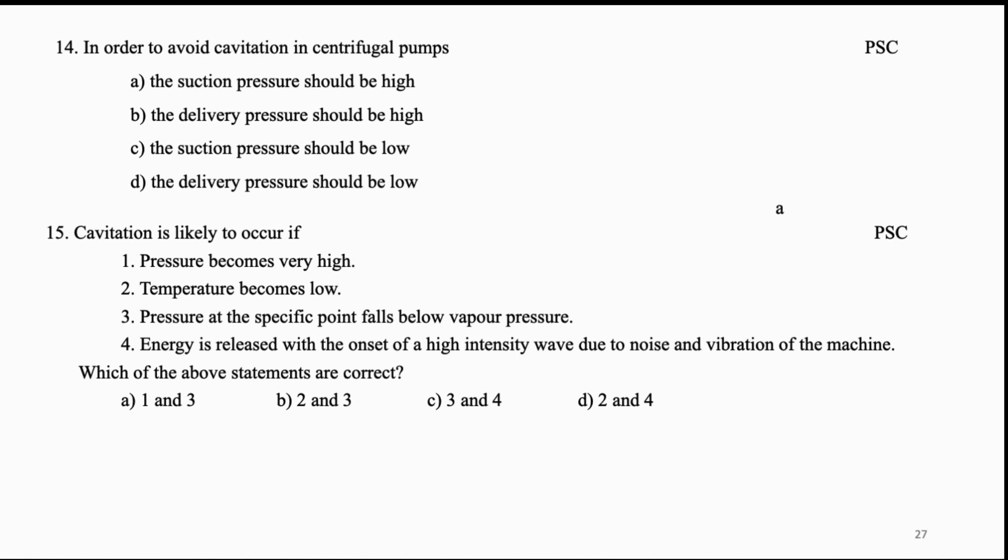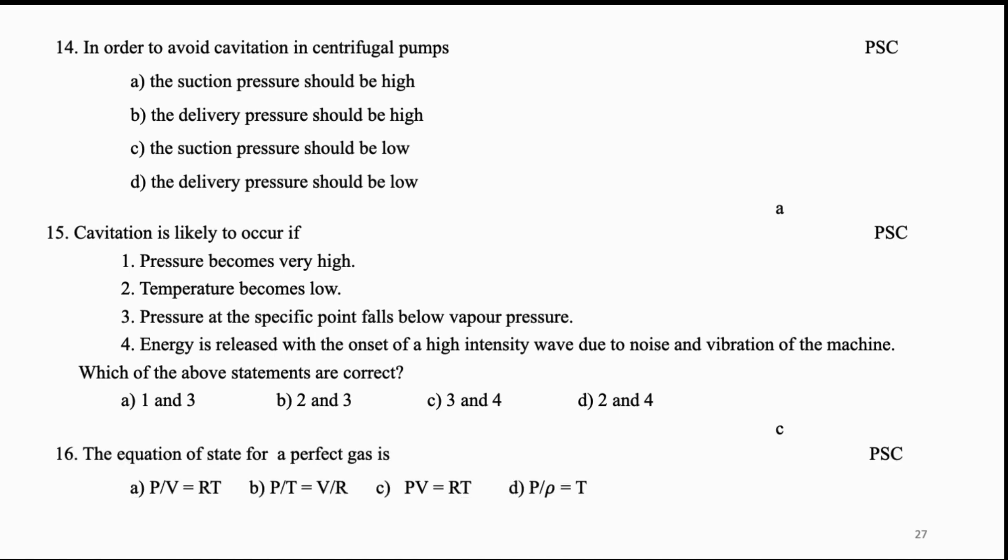Which of the above statements are correct? (A) 1 and 3, (B) 2 and 3, (C) 3 and 4, (D) 2 and 4. Answer is C. The equation of state for a perfect gas is: (A) P/V = RT, (B) P/T = V/R, (C) PV = RT, (D) P/ρ = T. Answer is C.